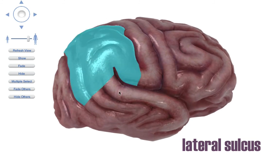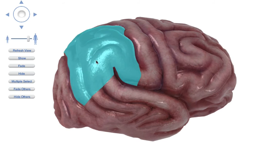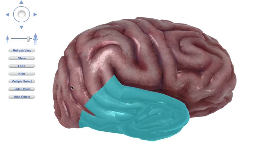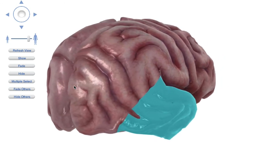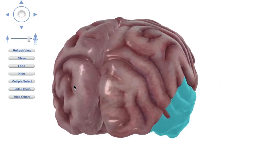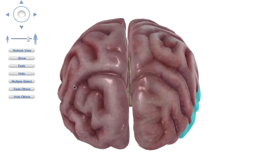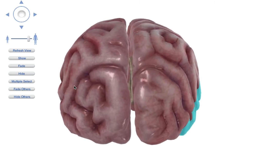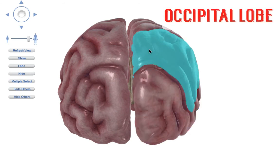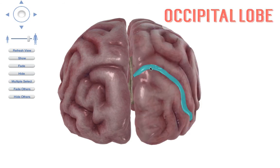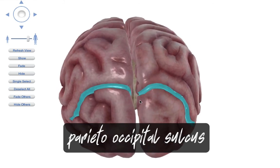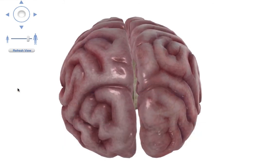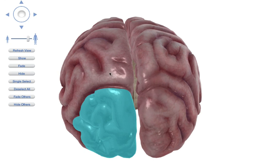The lateral sulcus is the border between the parietal and the temporal. And then let's go to the back — the posterior aspect. Now I'm taking a better look at the occipital. There's my longitudinal fissure. Here's my occipital. The border between the occipital and the parietal — we call this the parietal occipital sulcus, which makes sense. And here's the parietal occipital sulcus on the other side, which borders my occipital and parietal.